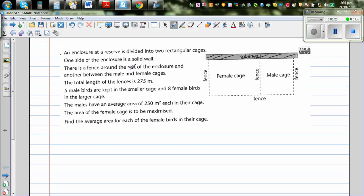There is a fence around the rest of the enclosure. So this is the fence between the male and the female. This is the fence and this is also a fence. So these dotted lines are the fences.